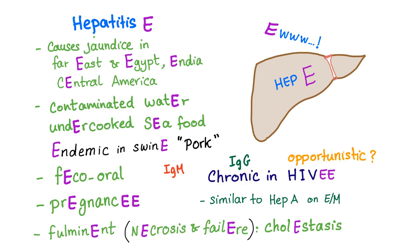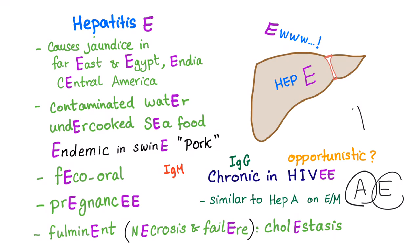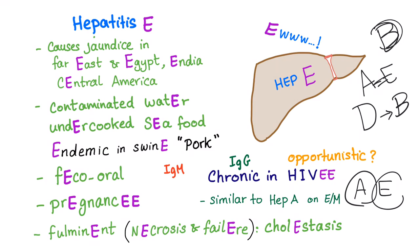Acute Hep E will have IgM antibodies in the blood, and chronic will have anti-HEV IgG. It's very similar to Hep A on electron microscopy. To remember that, A and E are both vowels. Hep D was dependent on Hep B — you can draw D like this and you have B — and A and E are vowels, so they go together, and those go together.